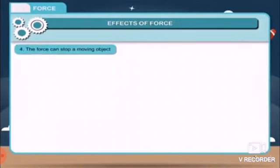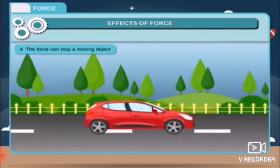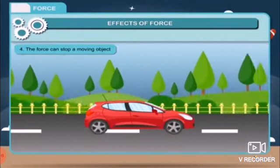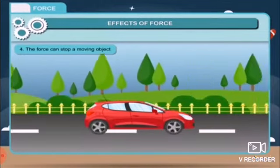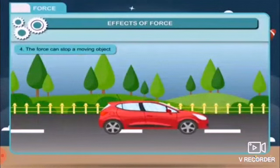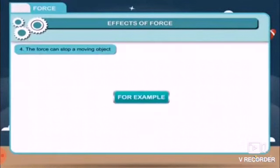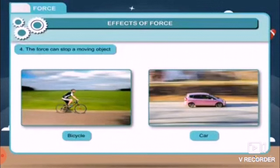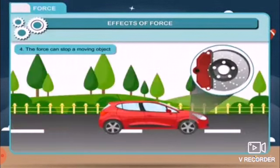Fourth, the force can stop a moving object. If force is applied in a direction opposite to the motion of an object, its speed will decrease and after some time the body will stop. For example, a moving bicycle or car can be stopped by brakes. The brakes will apply force in the opposite direction of the motion.